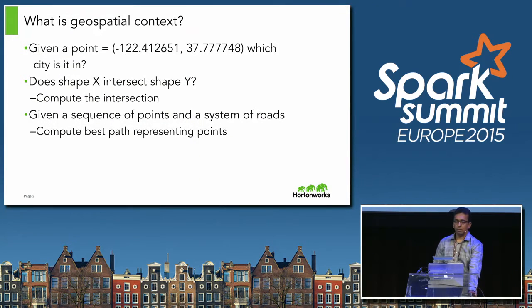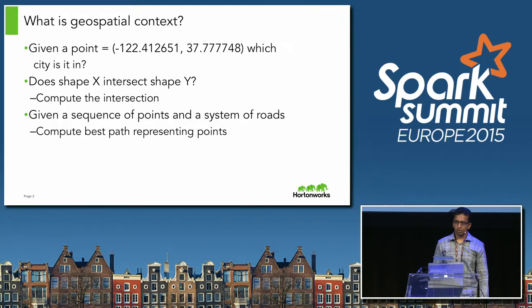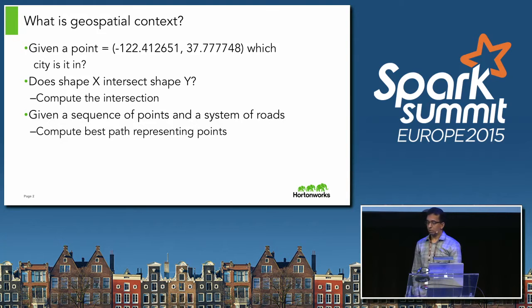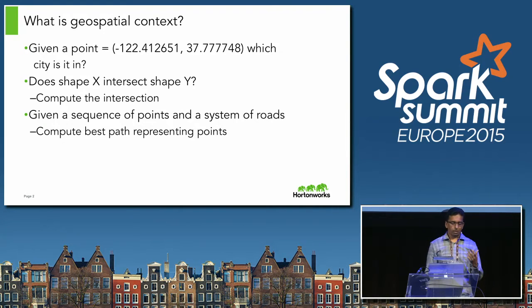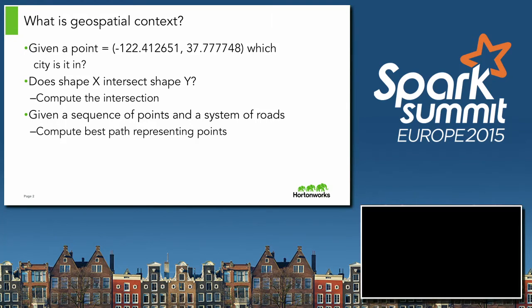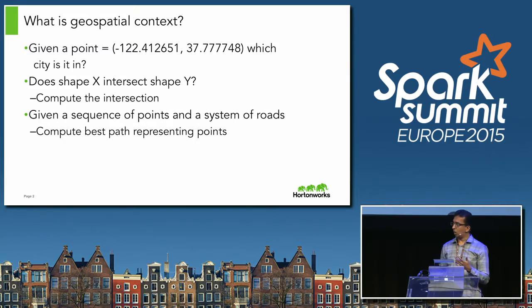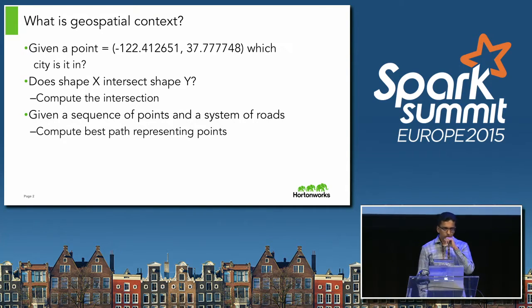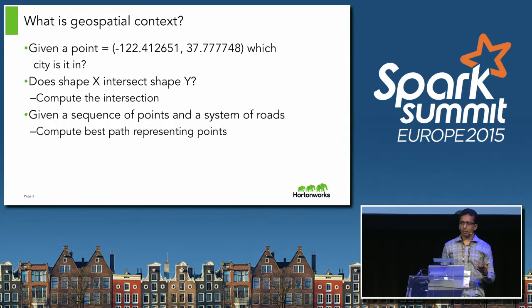To set some context — what is geospatial analytics? Any point or shape, you can attach metadata with it, which is basically what is its surrounding, what is it in. For example, given a longitude and latitude, which city does it represent? Similarly, given a shape, does it intersect some other shape? That's a fairly basic geometric question. If it does, what does the intersection look like?